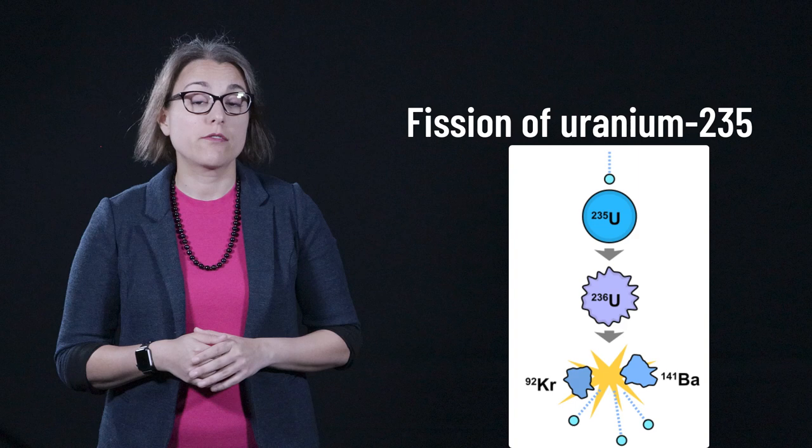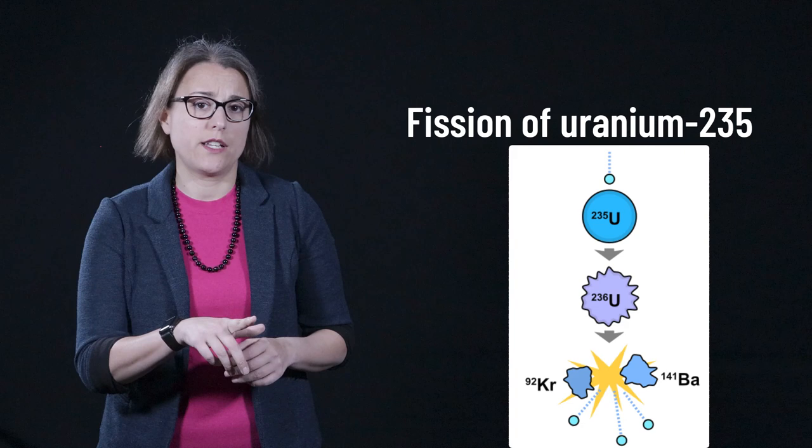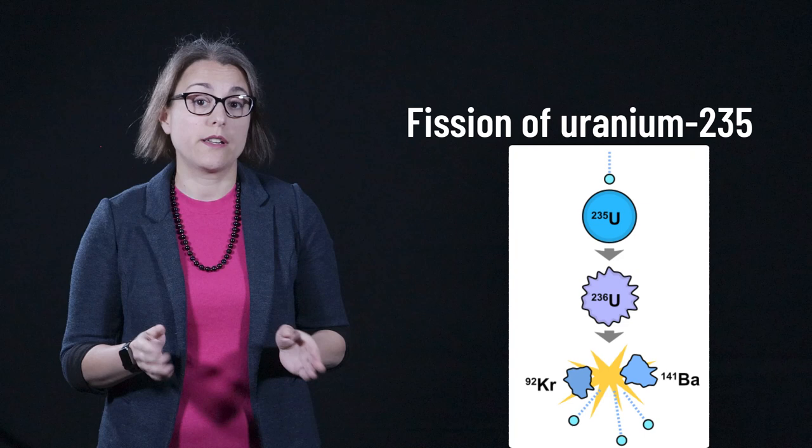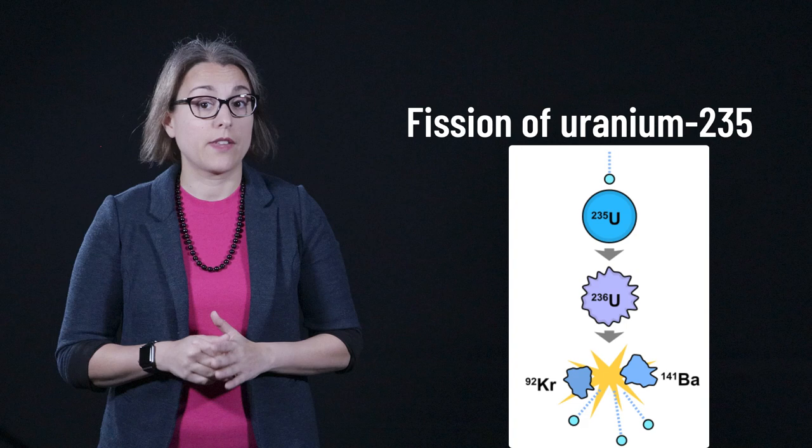Uranium-235 is a fissionable isotope of uranium. When shooting a neutron at uranium-235, the byproducts are krypton-92, barium-141, and three more neutrons. The total number of nucleons is conserved in this process, as is the charge. As mentioned, while mass is not conserved, mass energy is.